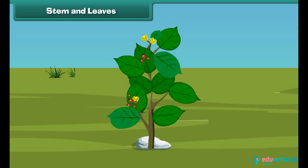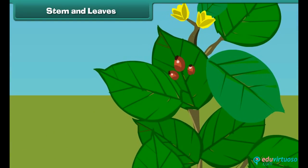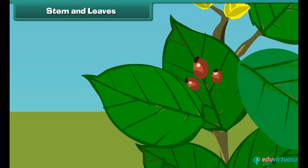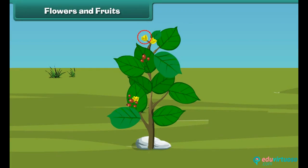Do you know which part of the plant helps it prepare food? That's right — it is the leaves! Leaves are green in color and are born out of a stem.